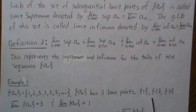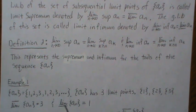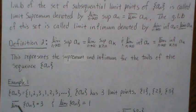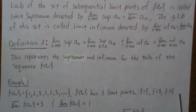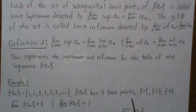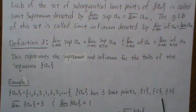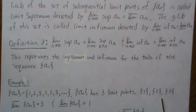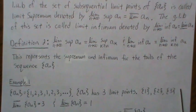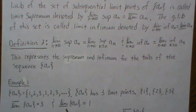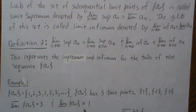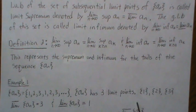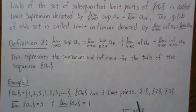The limit supremum of our sequence is 3 — that's the least upper bound for these three limit points. That's what the limit supremum is: the least upper bound of all of our limit points. So that's 3. And similarly, the limit infimum of AN is 1, because that's the infimum of our limit points.